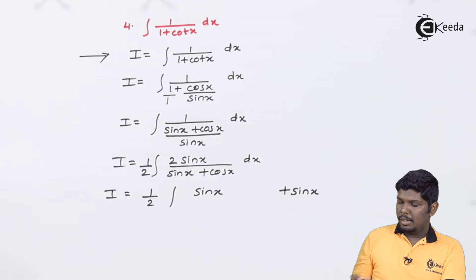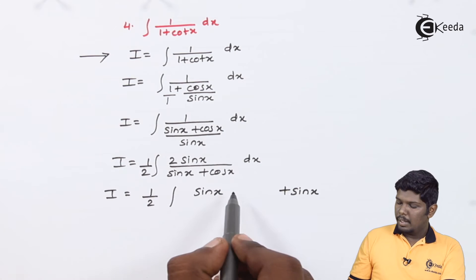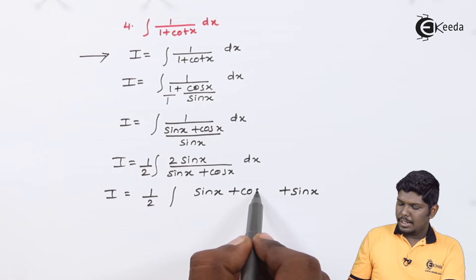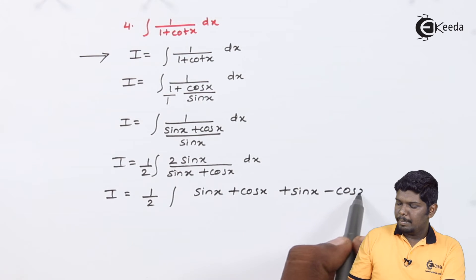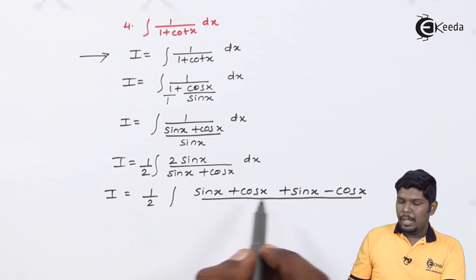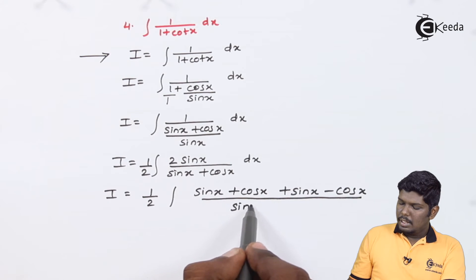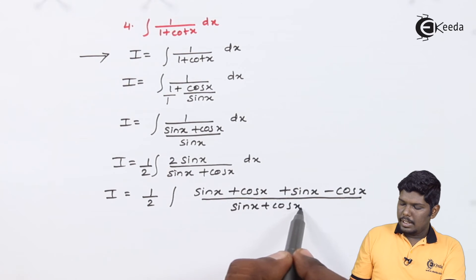And as you can see in the denominator, we need a cos x term. Therefore, we can give cos x and balance this cos x by subtracting the same. In the denominator, we have sin x plus cos x dx.